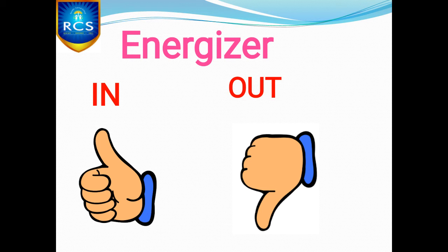That is, in and out. Children, listen. First, I will give you the instructions. You should listen and follow. If I say in, you have to show thumbs up. Then, if I say out, you have to show thumbs down. Are you clear with the instructions?